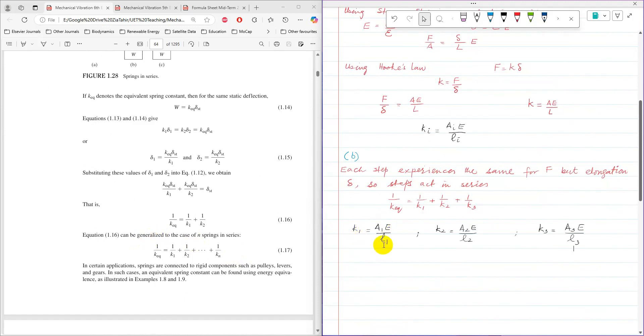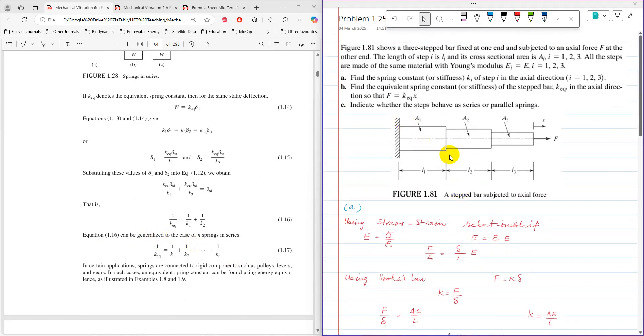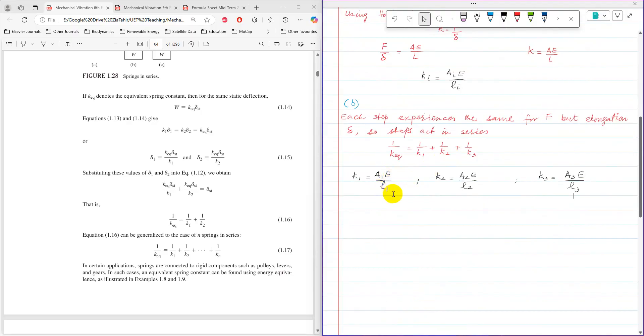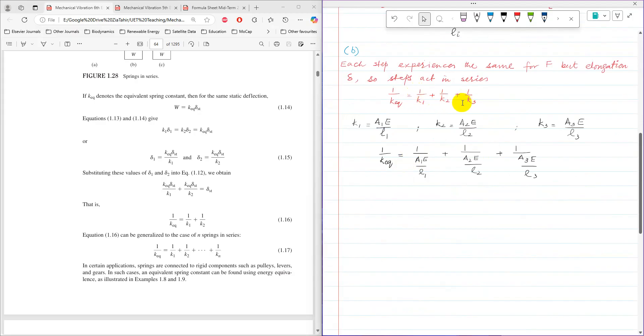K1 for the first step is A1E over L1. K2 is A2E over L2, and K3 is A3E over L3. So these values can be substituted into the equation 1 over K equivalent equals 1 over K1 plus 1 over K2 plus 1 over K3. So after substituting K1, K2, and K3 in the equation, 1 over K equivalent equals 1 over A1E over L1 plus 1 over A2E over L2 plus 1 over A3E over L3.